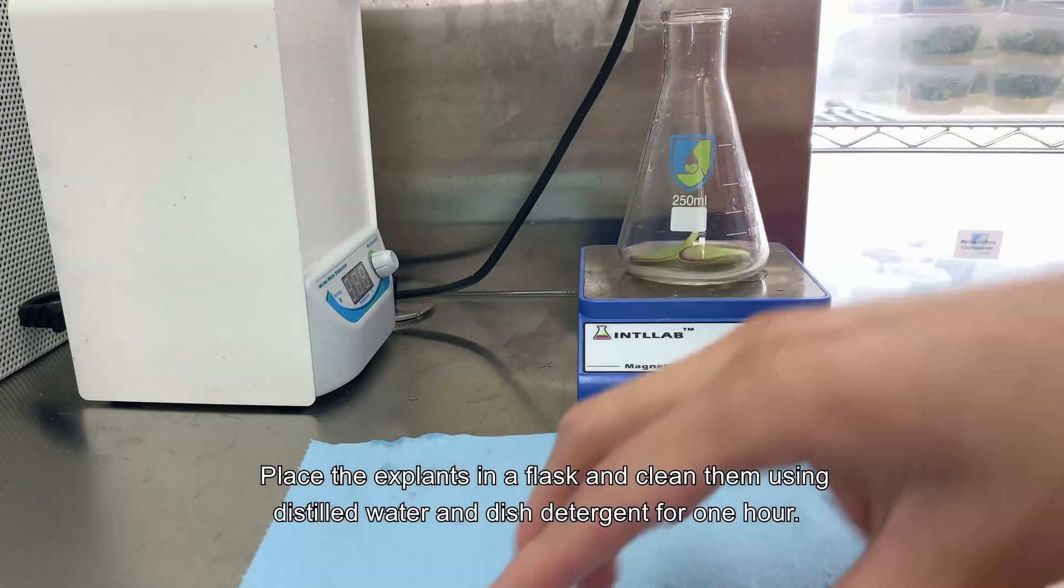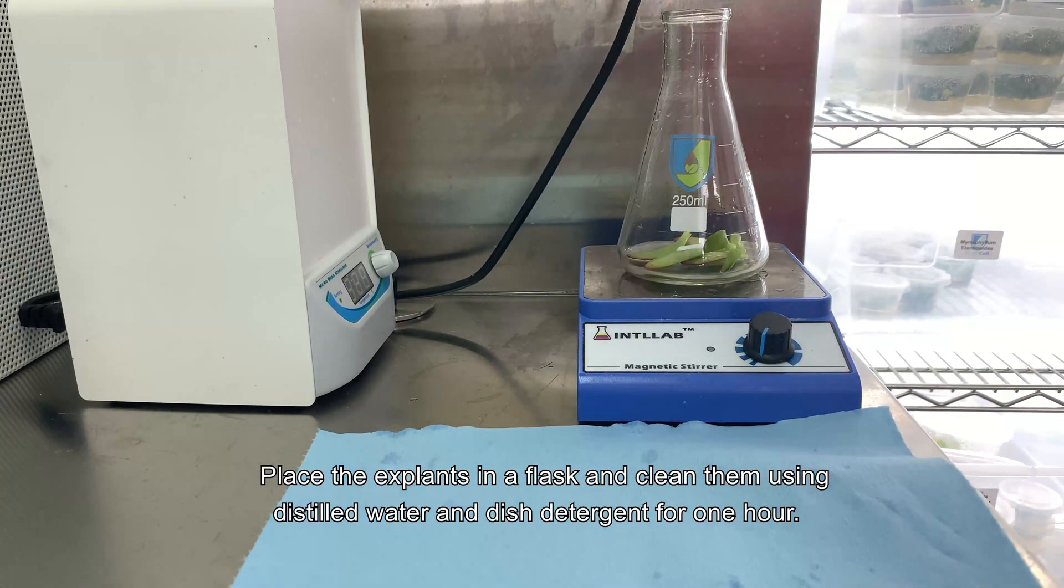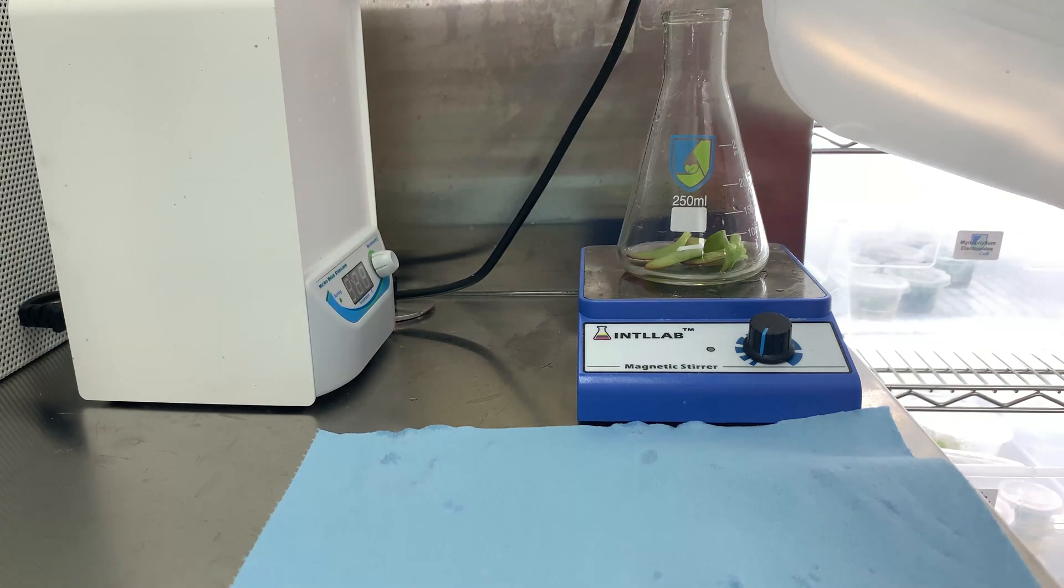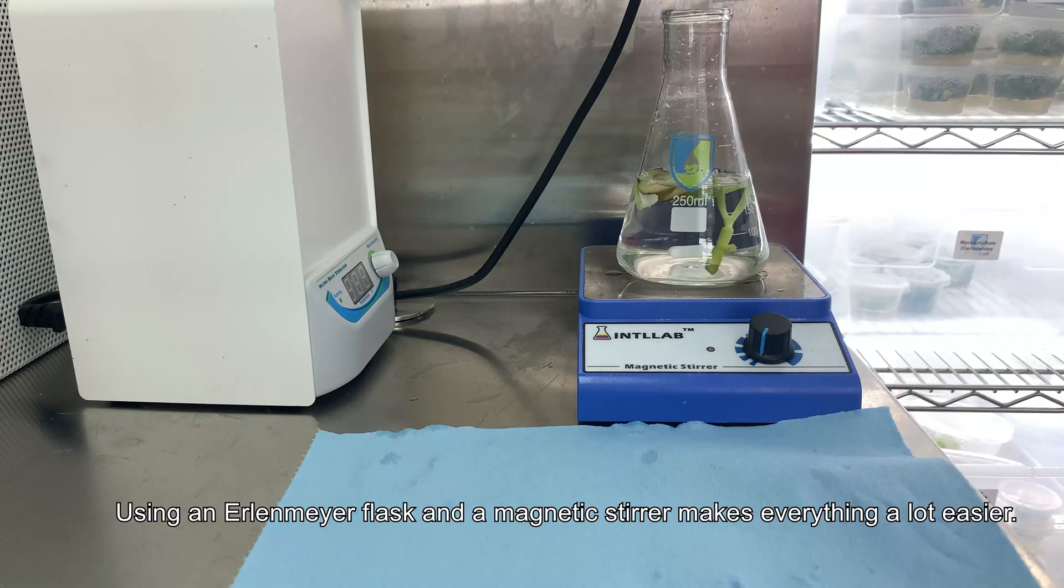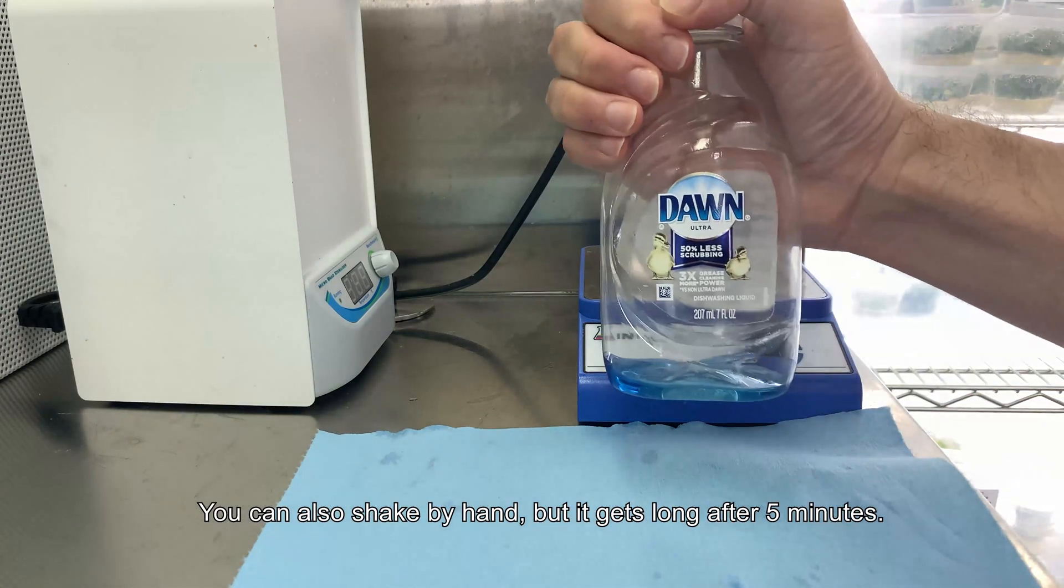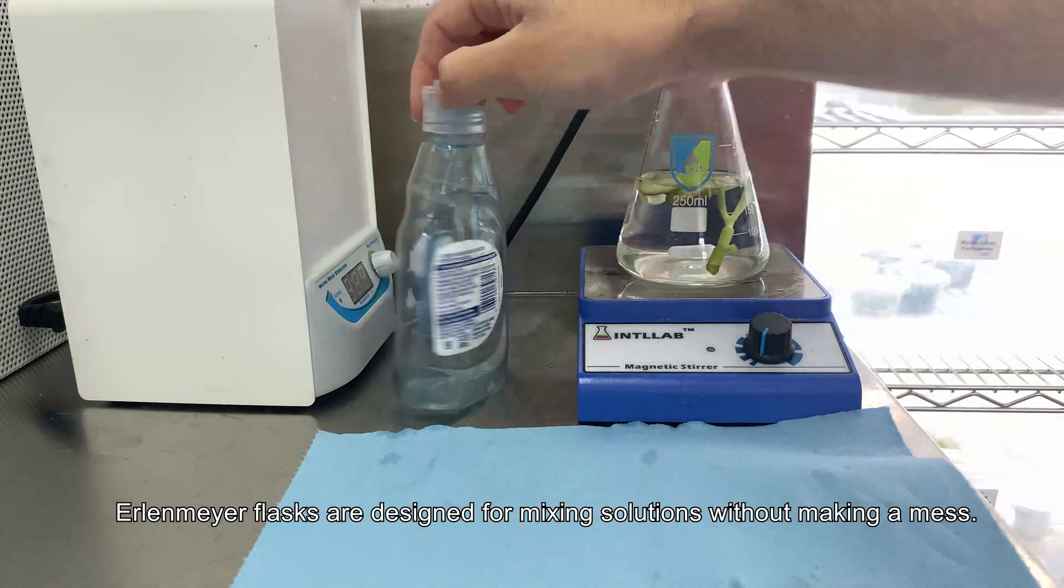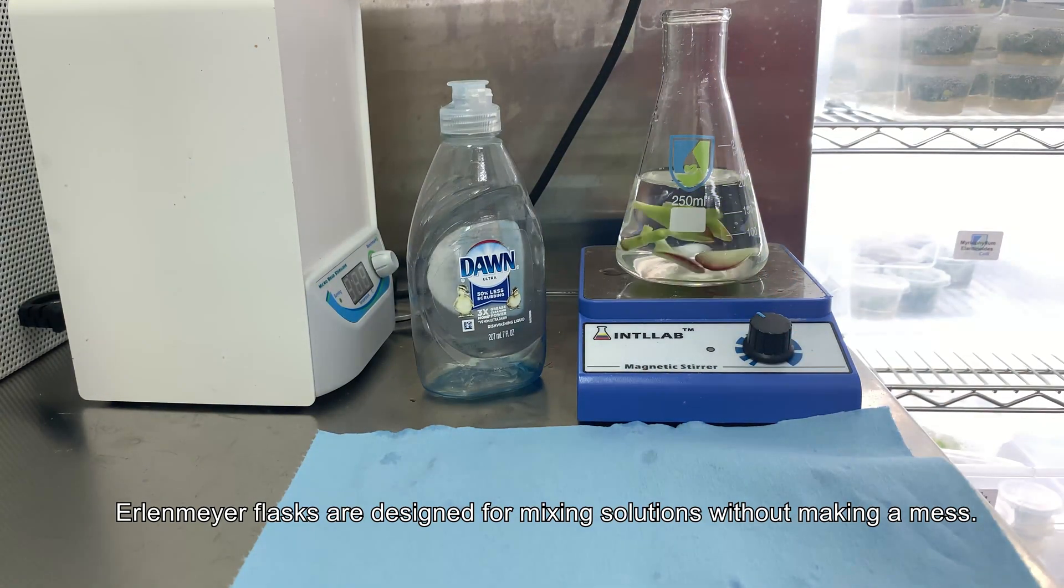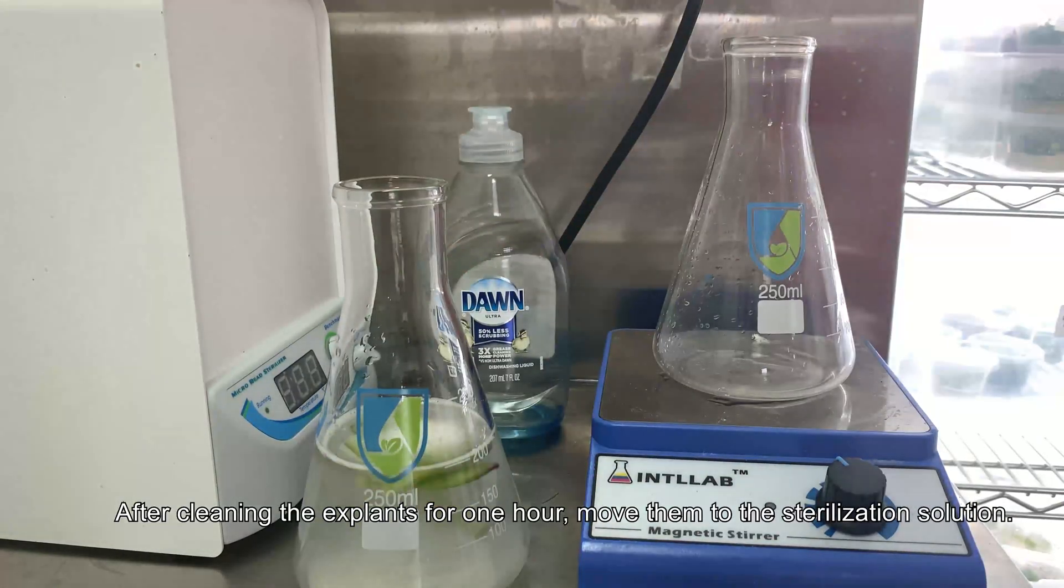Place the explant in a flask and clean them using sterile water and this detergent for one hour. Using an Erlenmeyer flask and a magnetic stirrer makes everything a lot easier. You can also shake by hand but it gets long. After five minutes, Erlenmeyer flasks are designed for mixing solutions without making a mess.